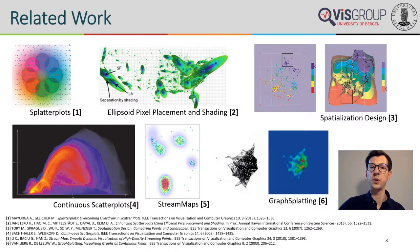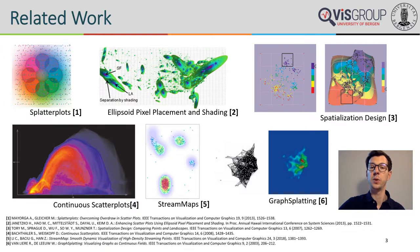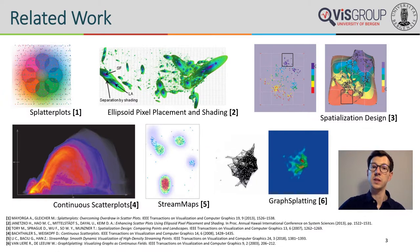Continuous scatter plots represent another approach that can handle increasing data size while avoiding over-plotting, but unfortunately they do not preserve the discrete nature of the data in sparse regions. Stream maps represent an approach capable of smoothly blending points using an adaptive kernel density estimation, showing that KDEs are popular not only in statistics but also in visualization. Another inspiration is the visualization of graphs as continuous fields rendered as color-coded maps, height fields, or sets of contours. These and many other related papers inspired us, and next I want to introduce sunspot plots.